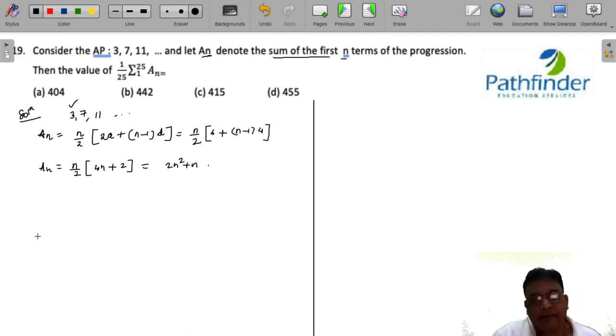Now we are interested in finding out what is the value of summation from n = 1 to 25 of (2n² + n). So if you simplify this, you get summation from n = 1 to 25 of 2n² plus summation from n = 1 to 25 of n.